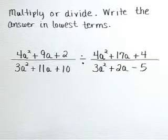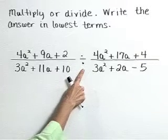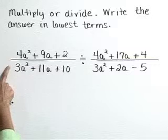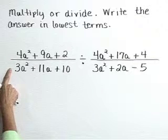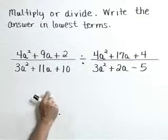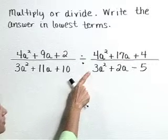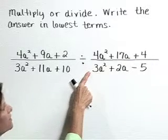Multiply or divide, write the answer in lowest terms. Here we have a division problem where we have the rational expression 4a squared plus 9a plus 2 over 3a squared plus 11a plus 10 divided by 4a squared plus 17a plus 4 over 3a squared plus 2a minus 5.